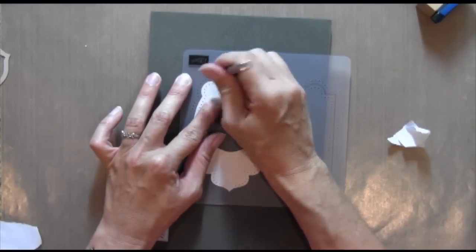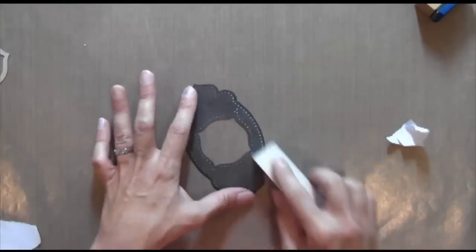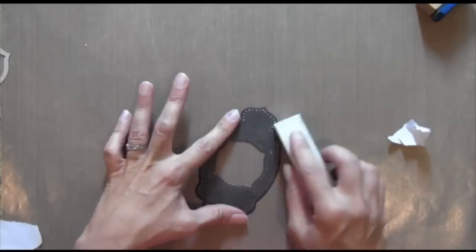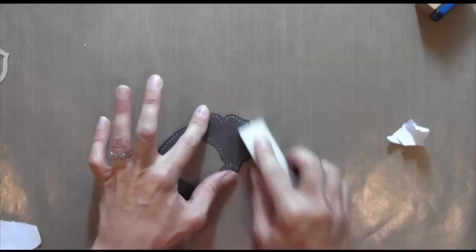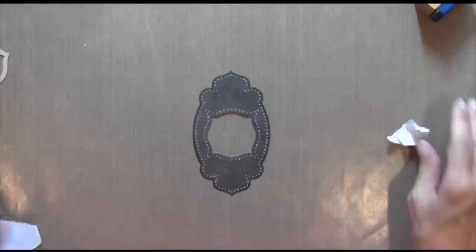And then I'm going to sand it down. And you can do this pretty much with any color on white cardstock. And you definitely want to use the white cardstock because that's what's going to make these dots show up as white. That was just a sanding block.